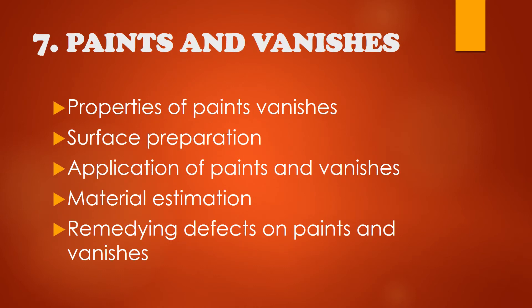Topic seven is paints and varnishes. Subtopics include properties of paints and varnishes, surface preparation, application of paints and varnishes, material estimation, and remedying defects on paints and varnishes.